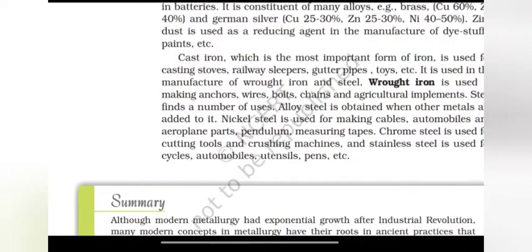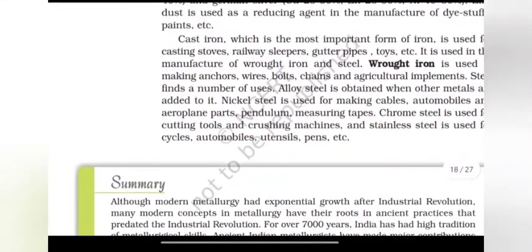Cast iron which is the most important type of iron is used for casting stoves, railway sleepers, gutter pipes, toys etc. It is used in the manufacture of wrought iron and steel. Wrought iron is used in anchors, wires, bolts, chains and agricultural implements.